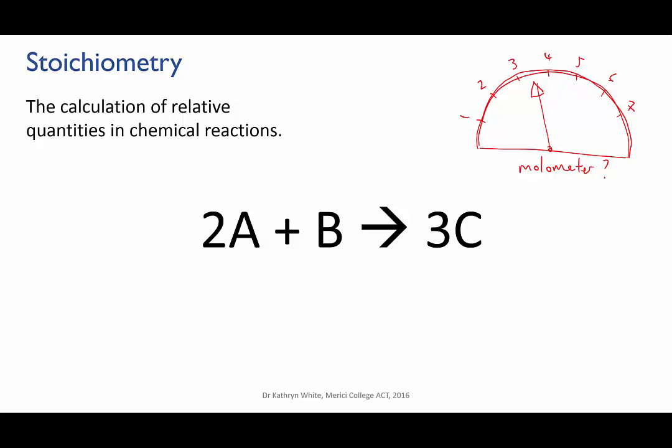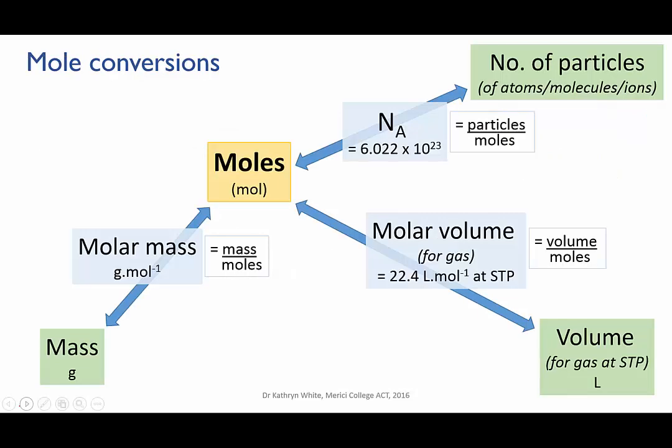Happily, we already have a strategy for doing this. You know that it's possible to convert moles of a substance into mass or number of particles or volume if it's a gas. The conversion factors are either a proper constant, like Avogadro's constant, or a constant under defined conditions, such as the gas molar volume, or can be calculated from information on the periodic table, like the molar mass.